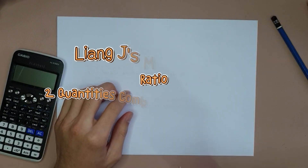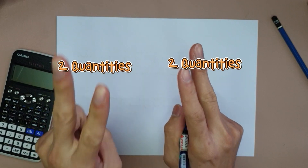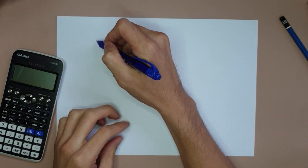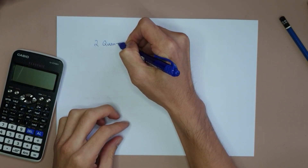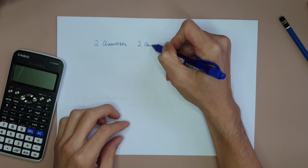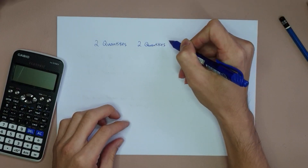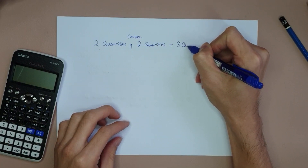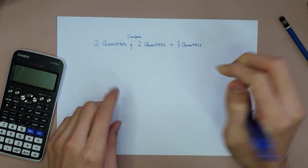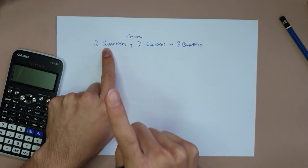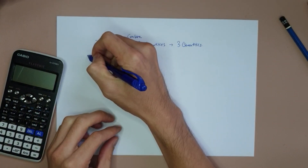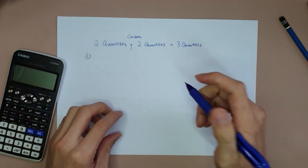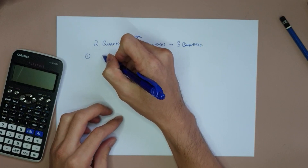Today I'm going to show you ratios — two-quantity ratios and another two-quantity ratios. We're going to combine them into one ratio called a three-quantity ratio. I'll write the title: two quantities and another two quantities, combined to make a three-quantity ratio. What happens is your two ratios share one common quantity. I'll give you Example 1, and after that I'll show you the hamburger method and one HOTS question.